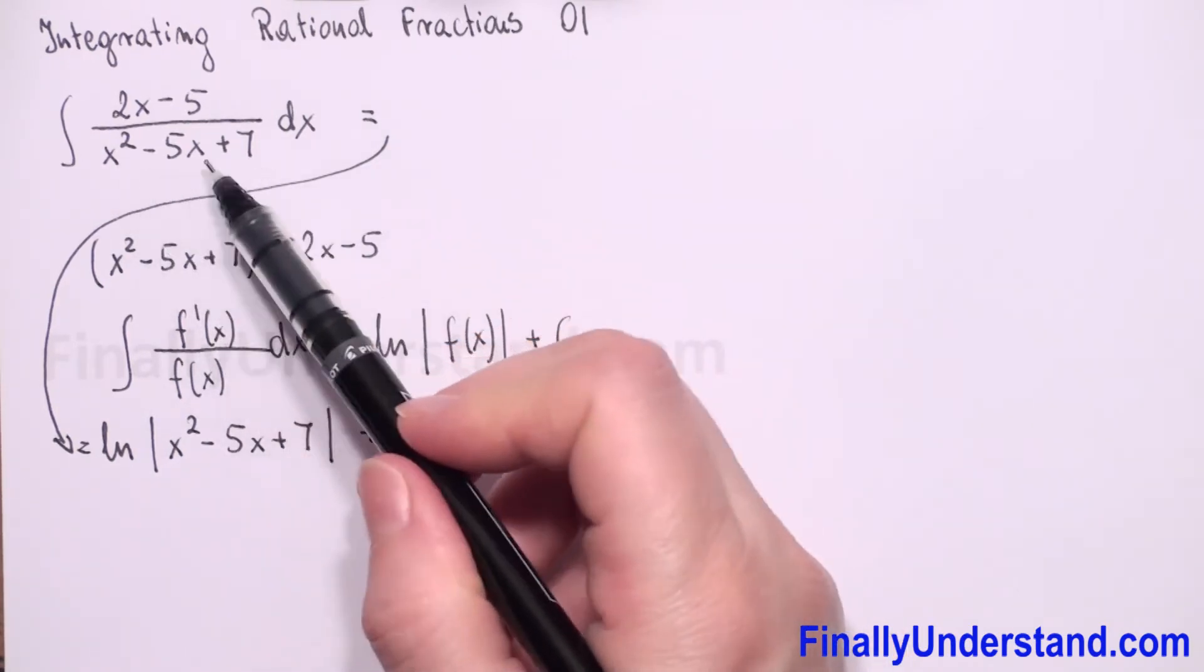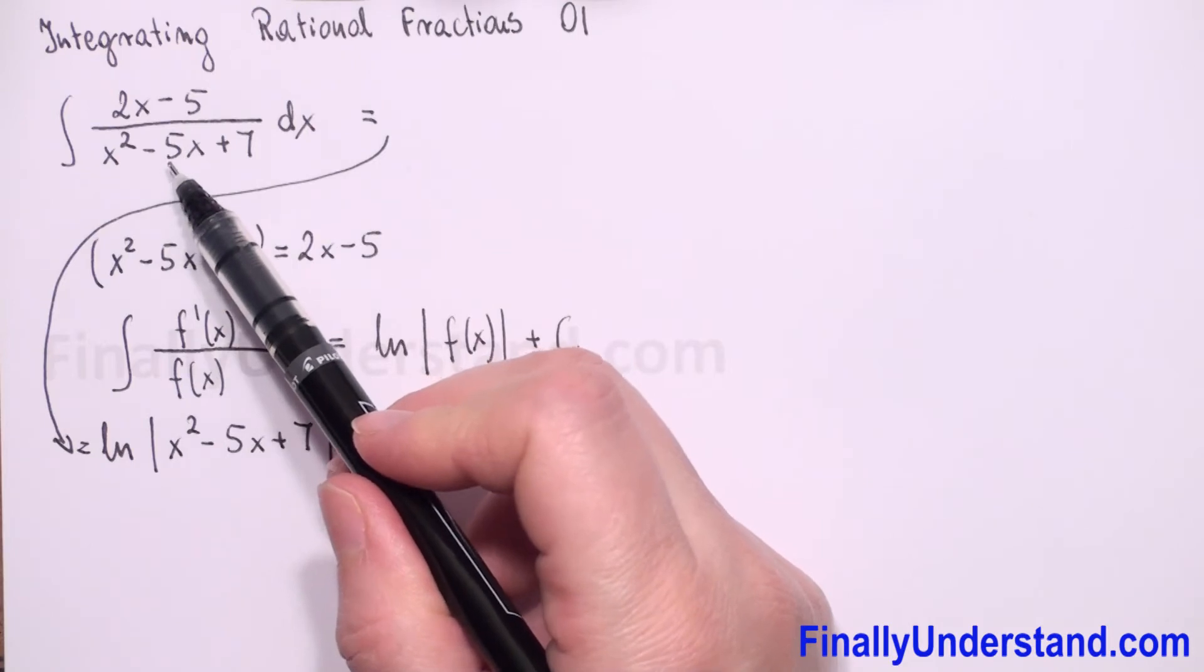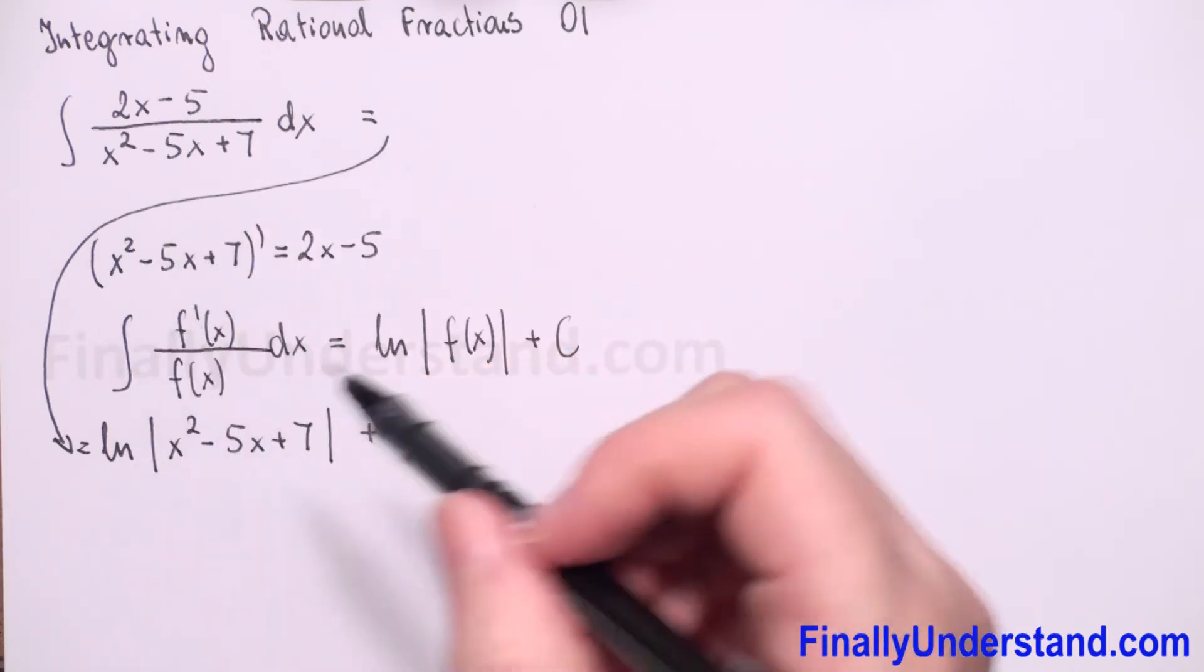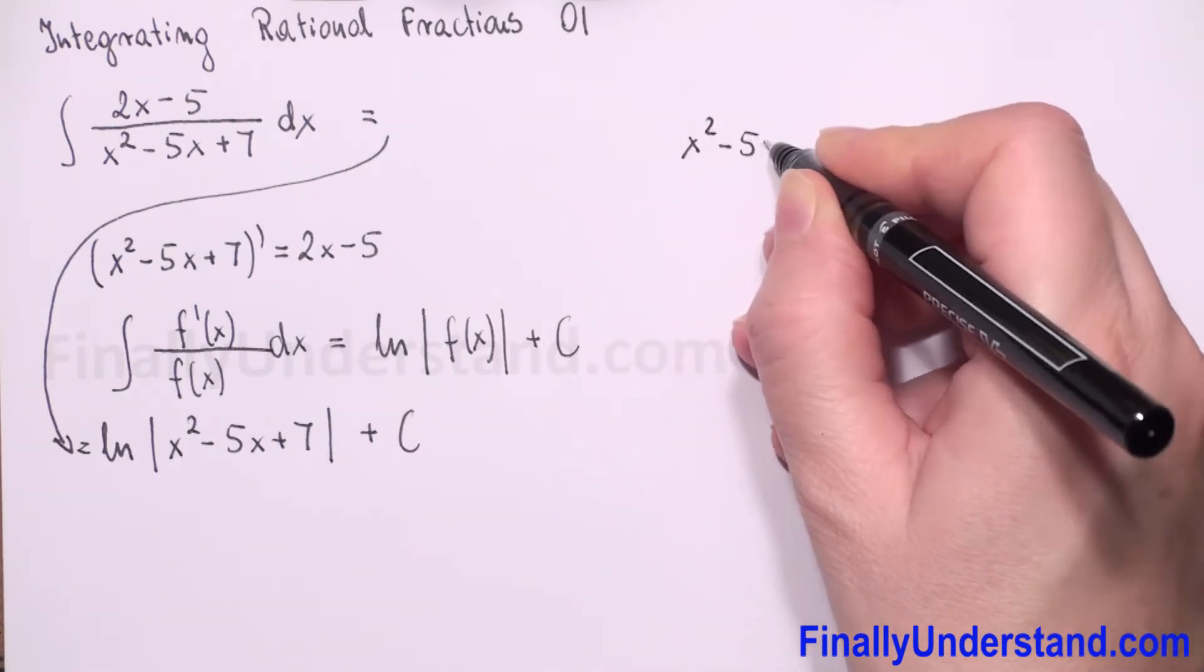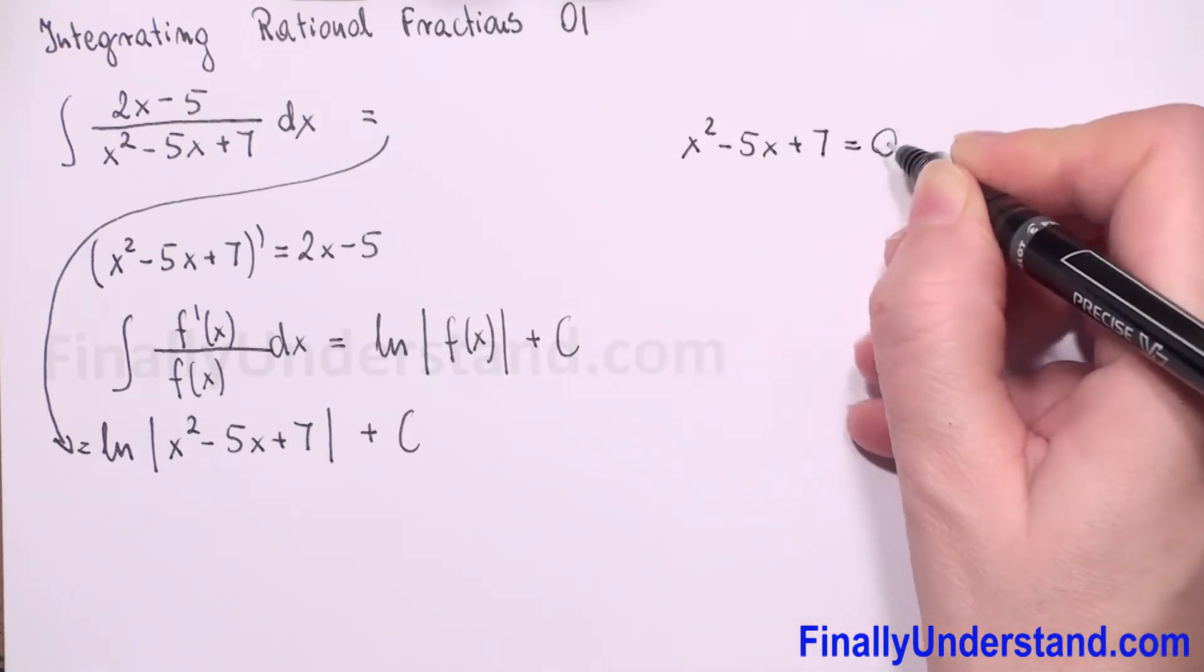Because we have fraction here, we always check the denominator. We cannot have 0 in the denominator. So let's solve equation x square minus 5x plus 7 is equal to 0.